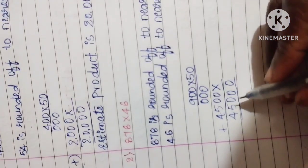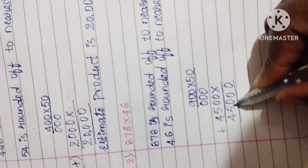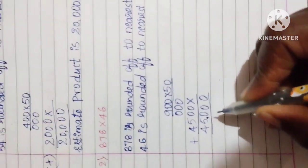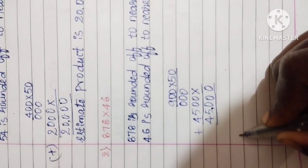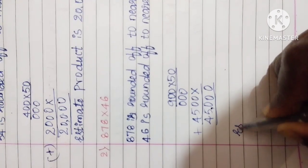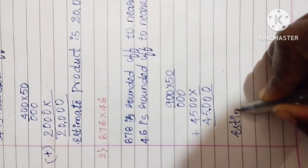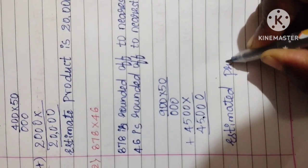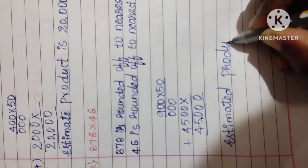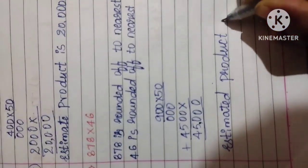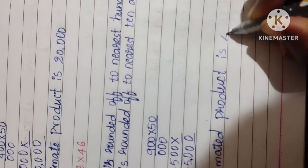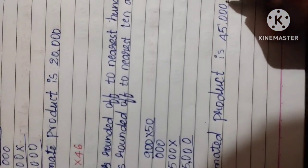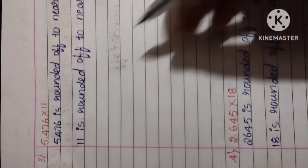The answer is 45,000. Estimated product is 45,000. Next, we have the third question.